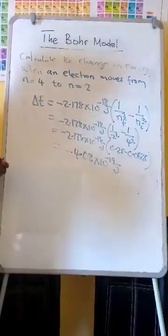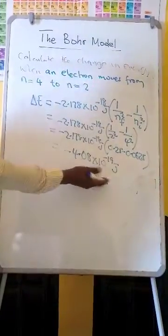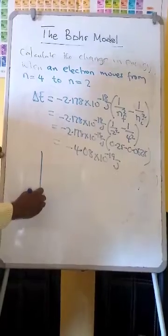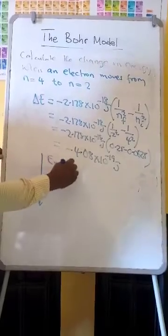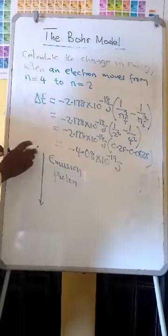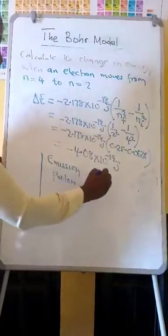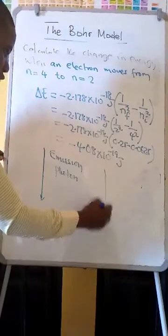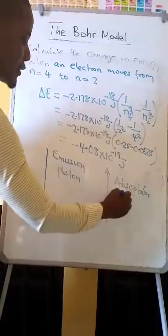This is the change in energy when the electron moves from n equal to 4 to n equal to 2. The negative sign shows the direction of the energy — in this case, this is emission. There is an emission of a photon when the electron moves from a higher level to a lower level. When the electron moves from lower to higher, it absorbs a photon.